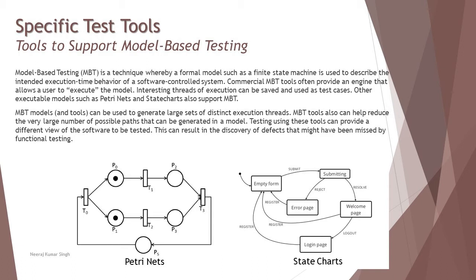Regarding petri nets and state charts, there is a picture on the presentation for a quick look, but for more detail you should refer to the model-based testing syllabus. A petri net, also known as a place-transition net, describes transitions happening between places, similar to a state transition diagram, and is one of several mathematical modeling languages for describing distributed systems. It is a class of discrete event dynamic system, and a petri net is a directed bipartite graph where nodes represent transitions and places are represented by circles.